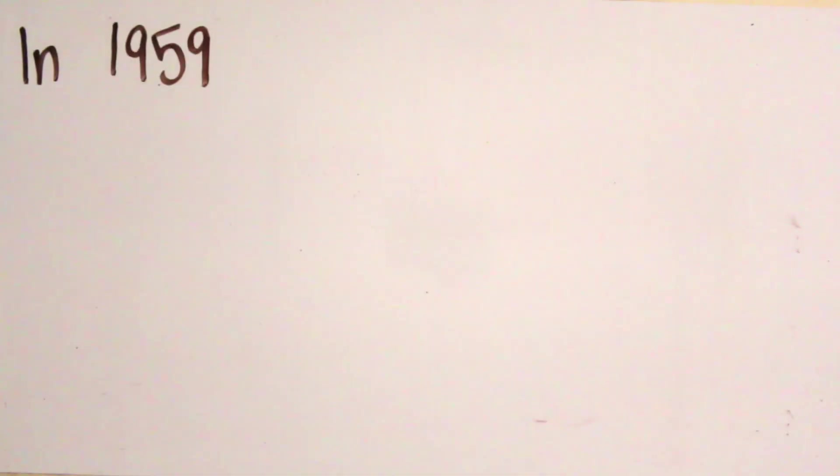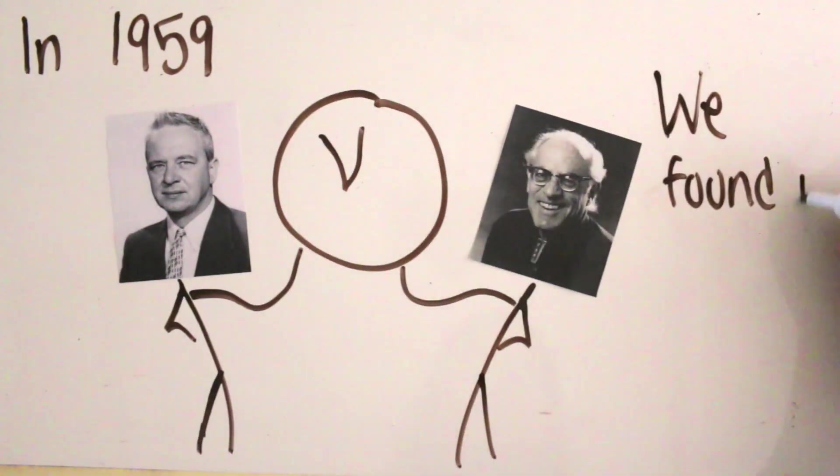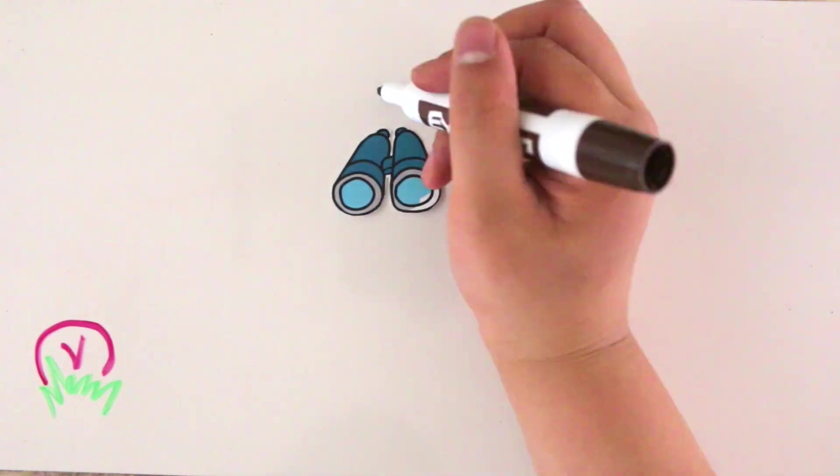In 1959, Clyde Cowan and Frederick Reines discovered the particle, and now physicists are on the hunt to detect neutrinos to learn more about them.